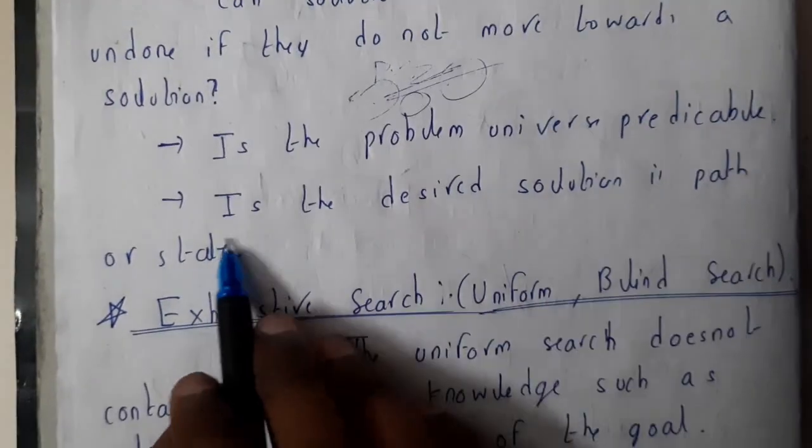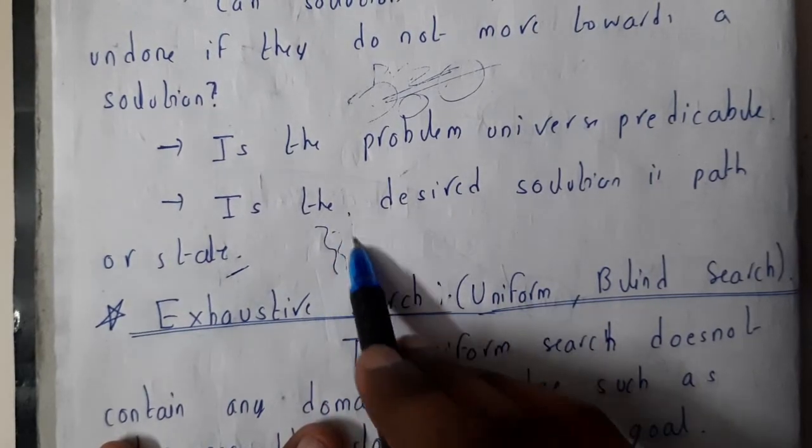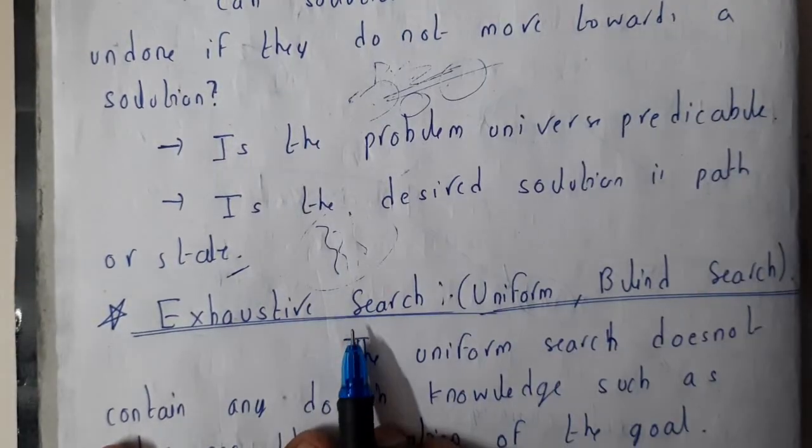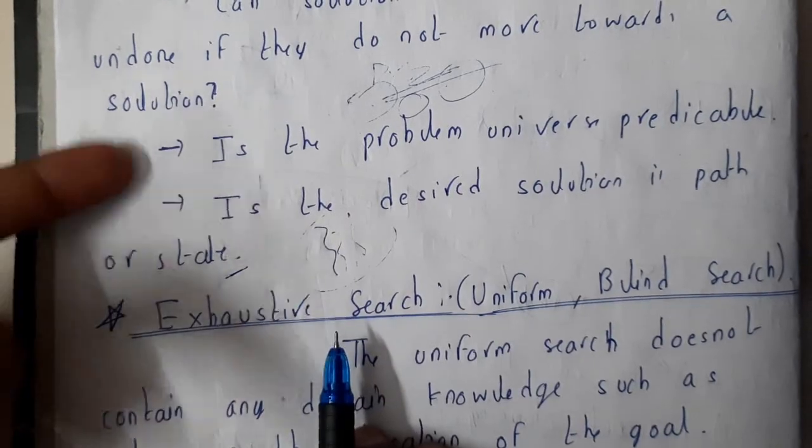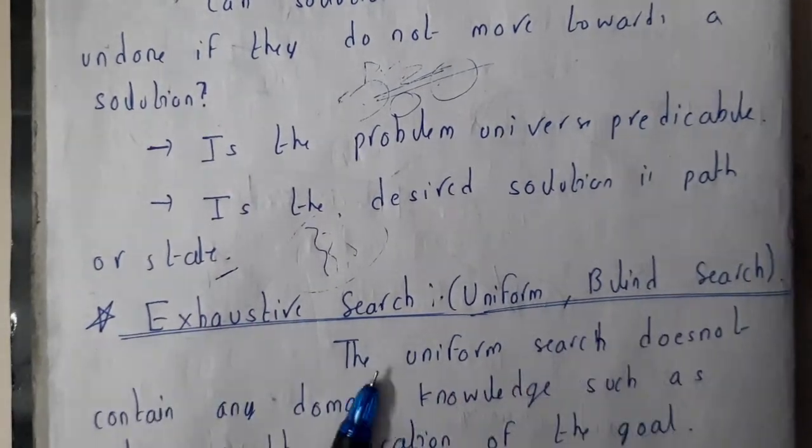Is the desired solution the path or the state? Are you going in the correct path or not? So these are the main things that you should go through when you are doing a problem. You need to think of these problems. So I hope everyone got a small idea on this.